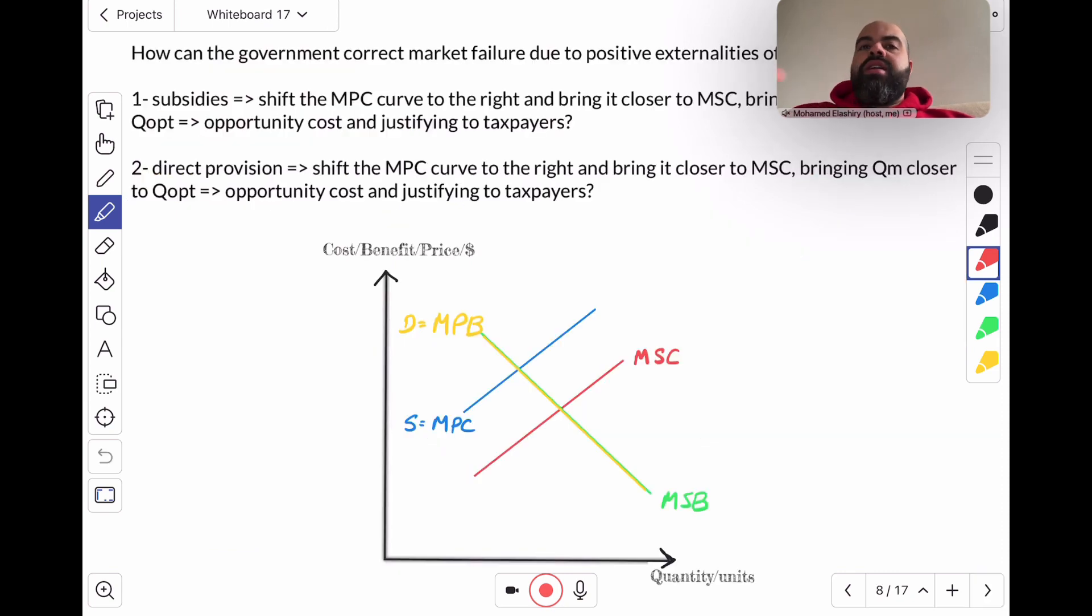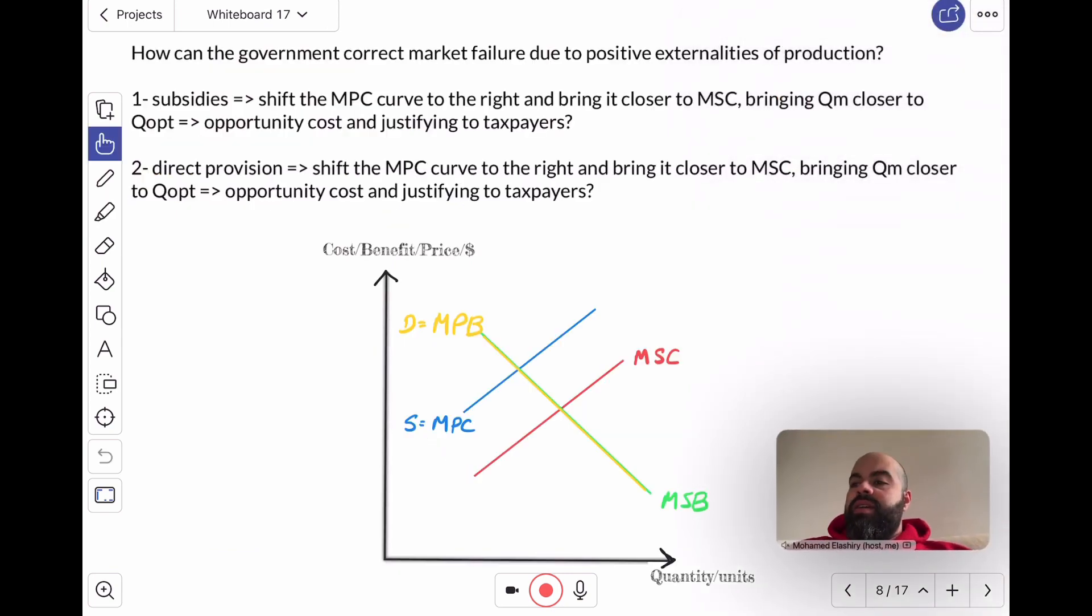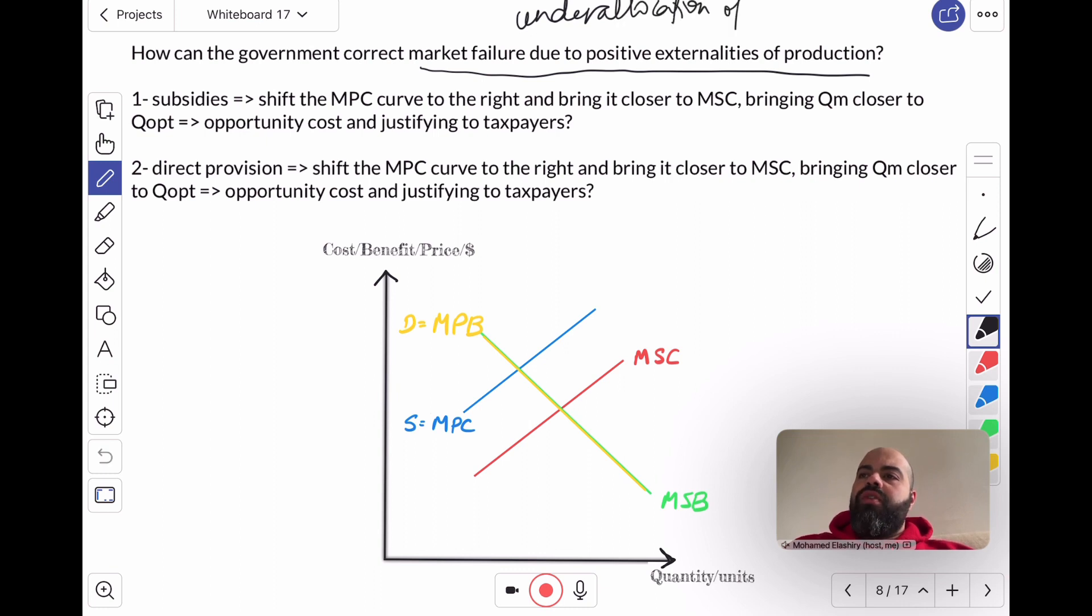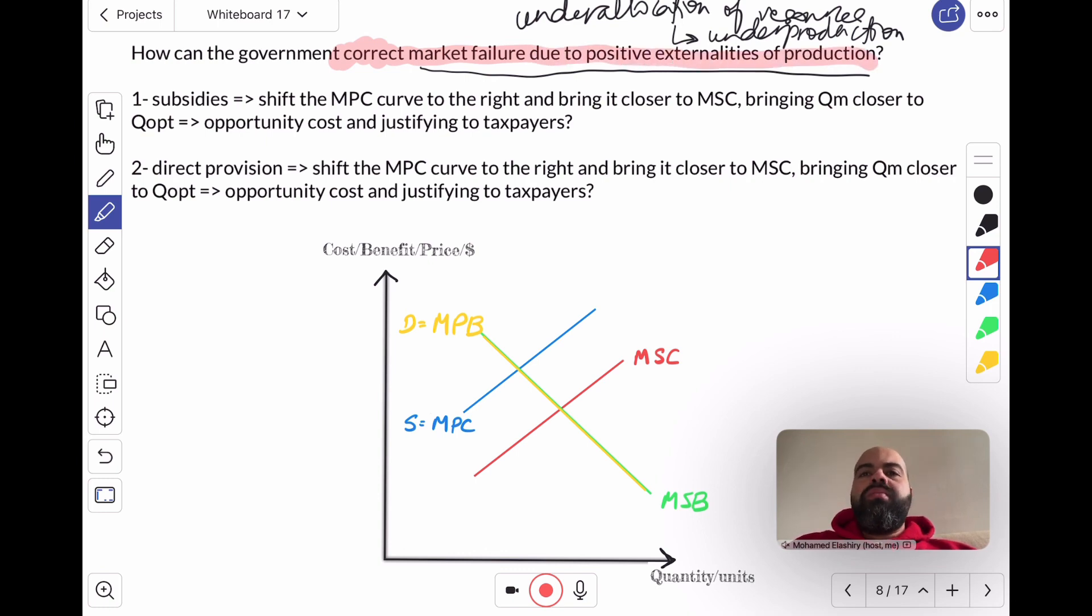How can the government correct market failure due to positive externalities of production? Now, remember, this market failure takes the form of an under allocation of resources. And the result of this under allocation of resources is that the market will underproduce. How can the government correct this kind of market failure? Well, there are two main strategies. Number one, subsidies.